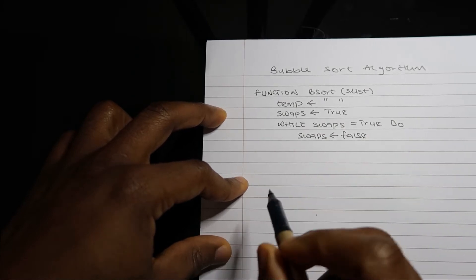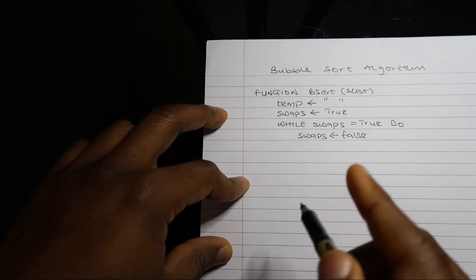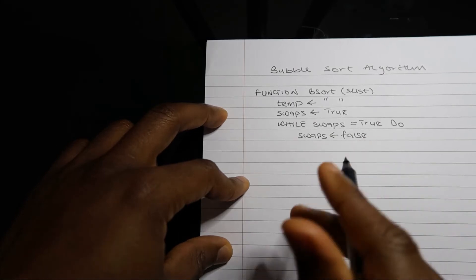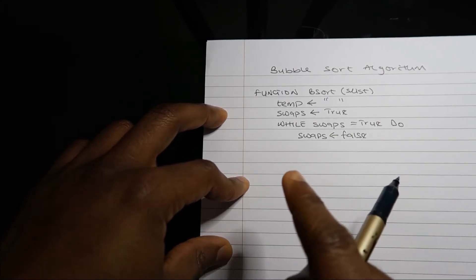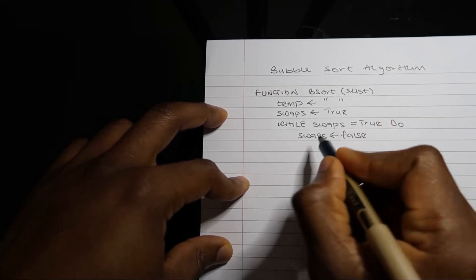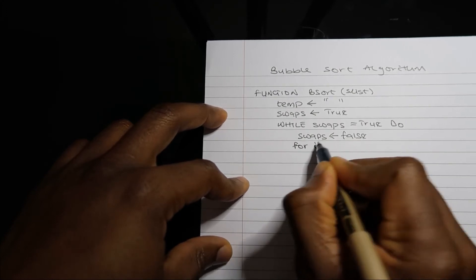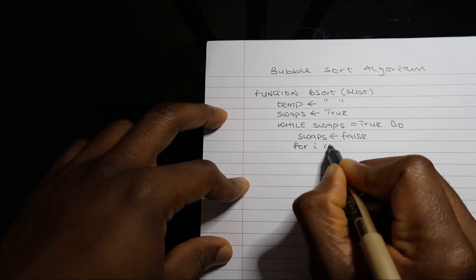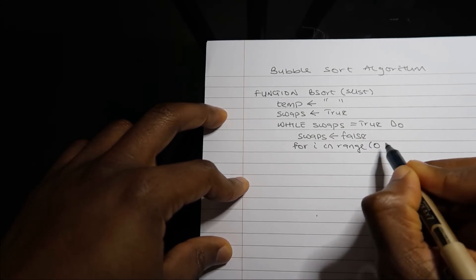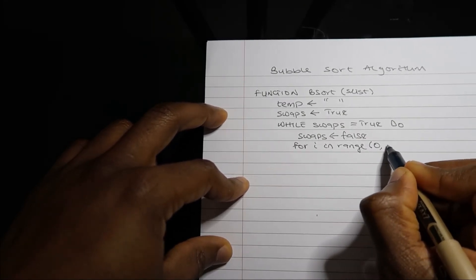Now we're going to start checking using a for loop inside my while loop. We're going to start checking two closest items in the list, starting from the first one. I'm going to say for i, which is my counter variable, in range zero, starting at the first position, to the length of my list.